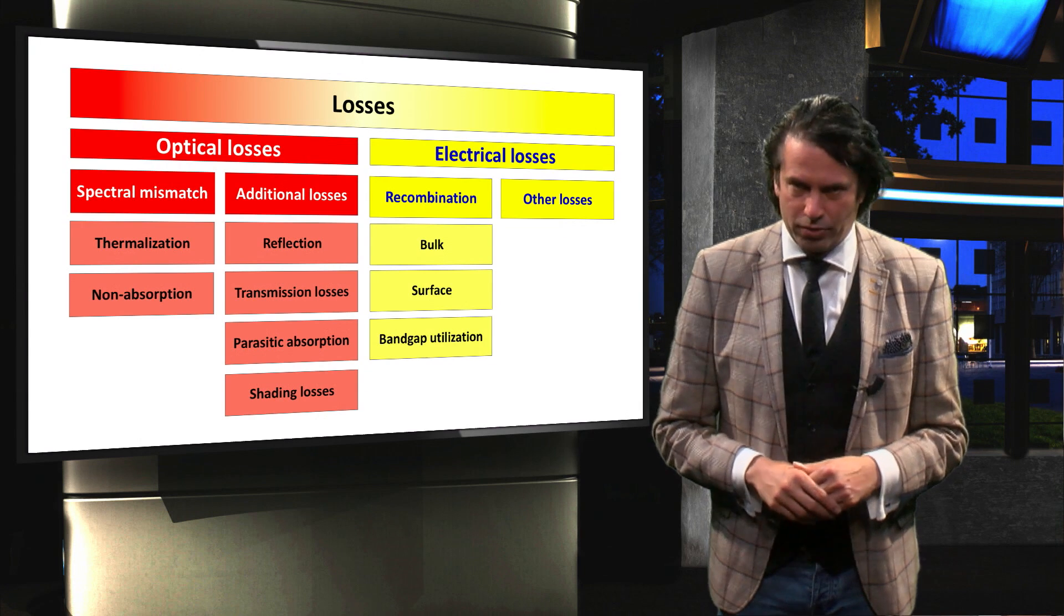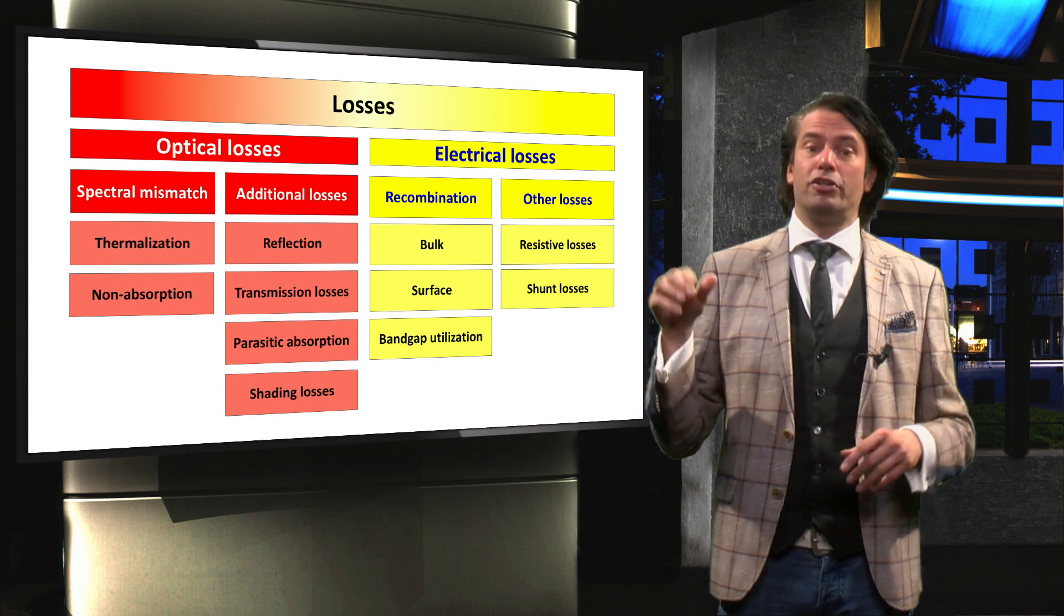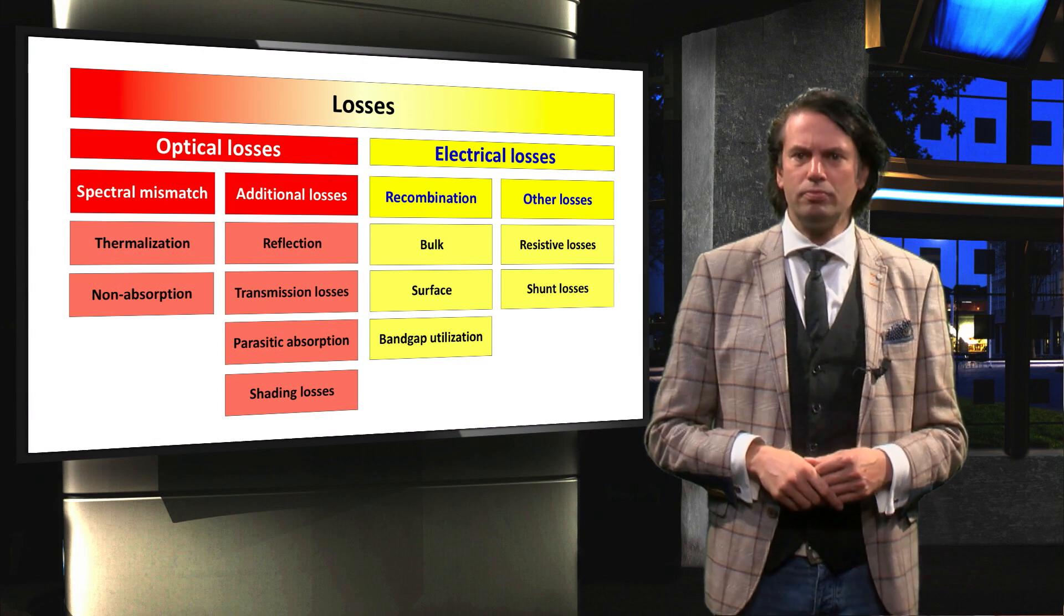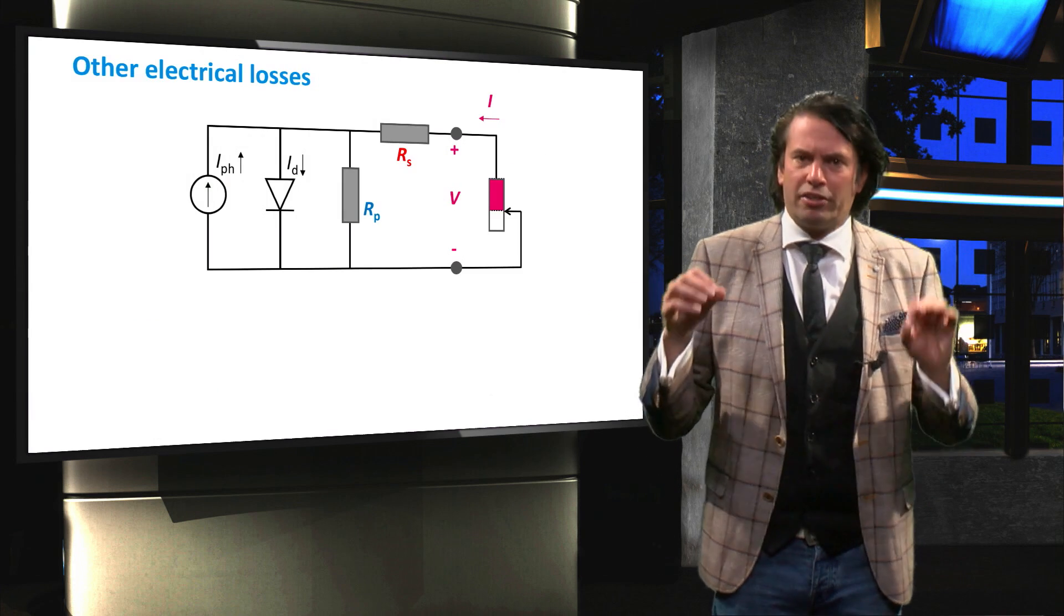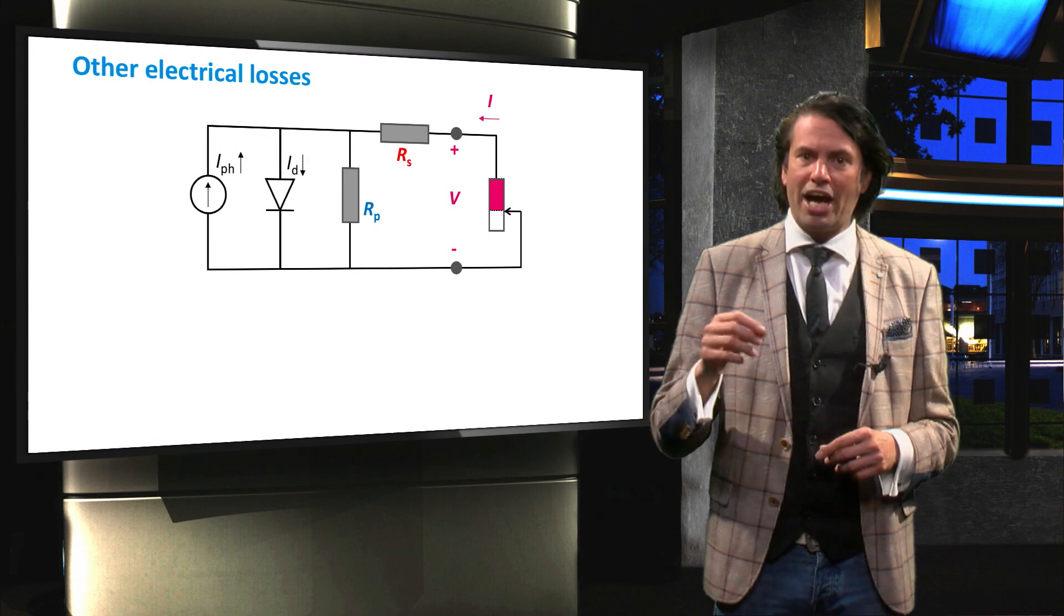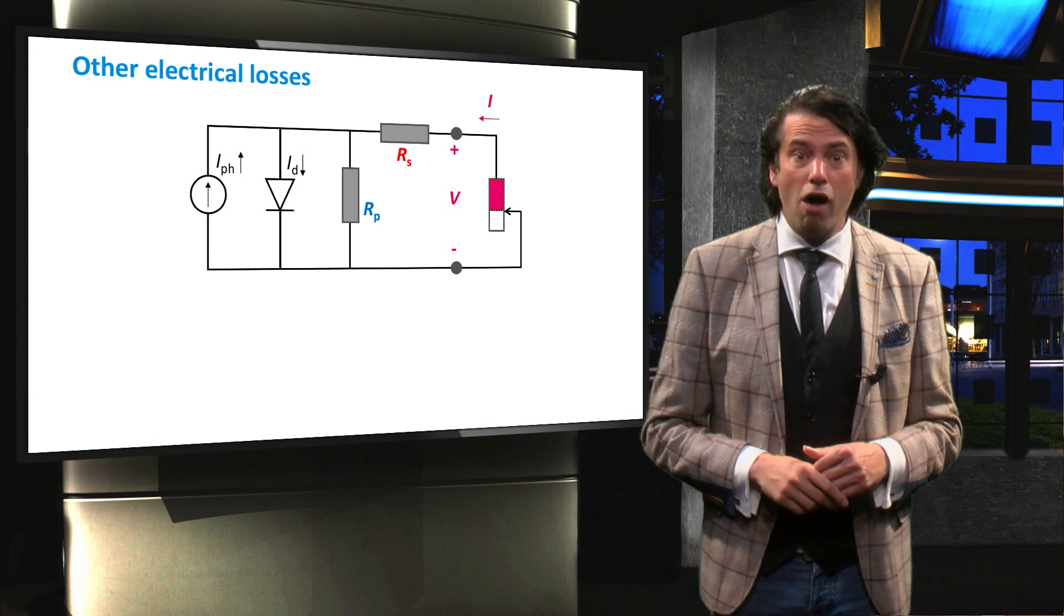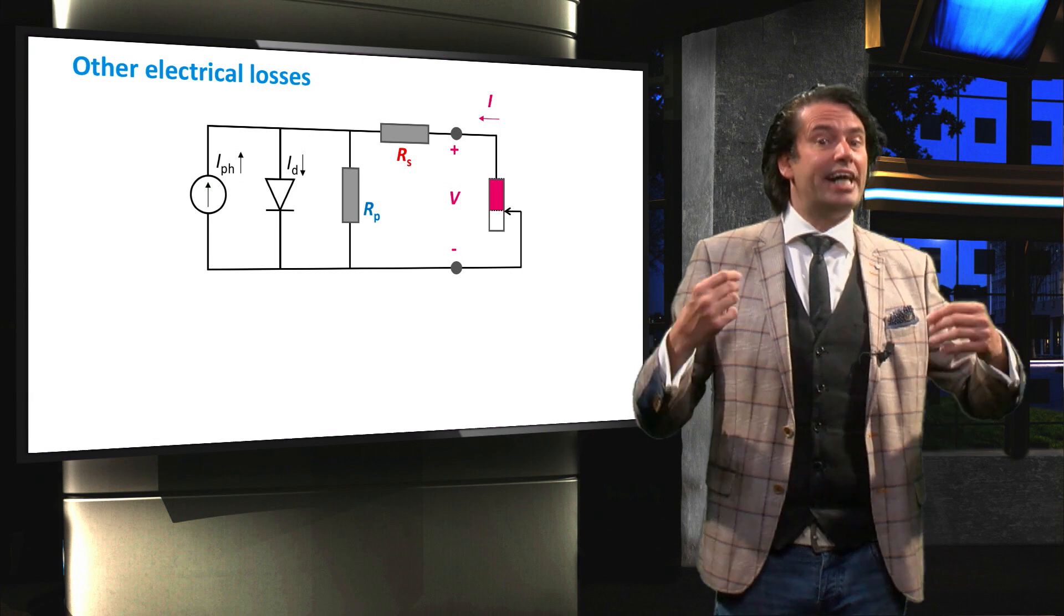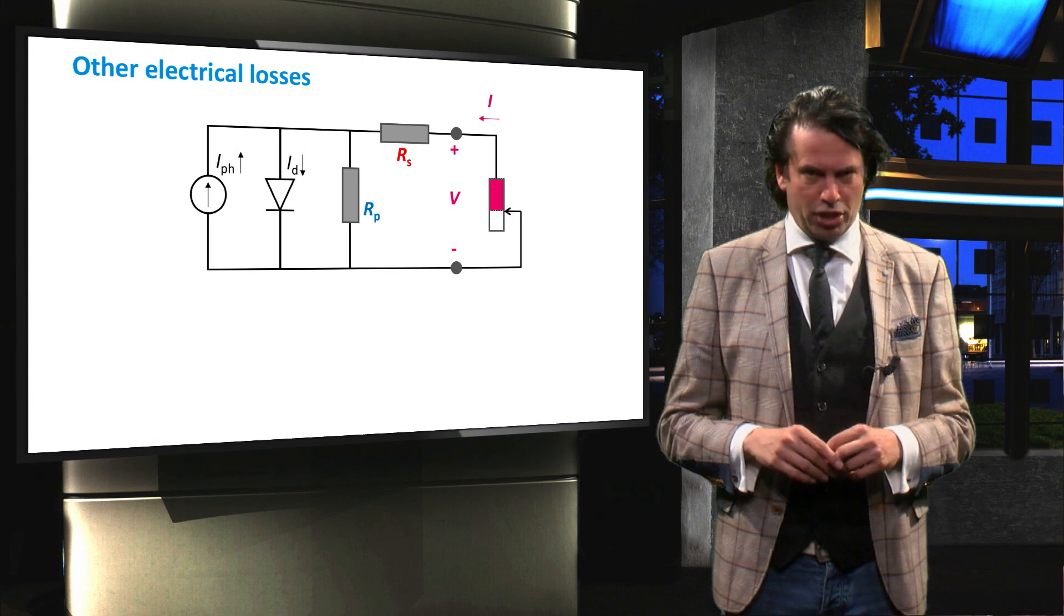Finally there are the other electrical losses. These involve the resistive losses and shunt losses. To understand the resistive series losses and shunt losses, we first look at the equivalent circuit of a solar cell. Here you can see the so-called single diode model for a solar cell.